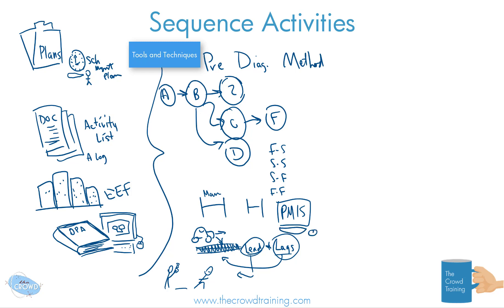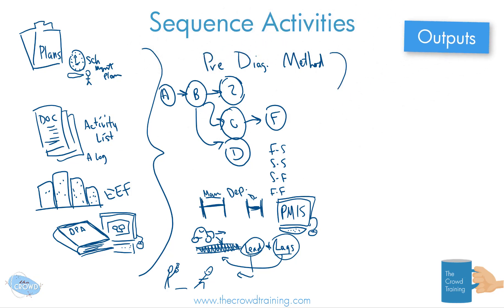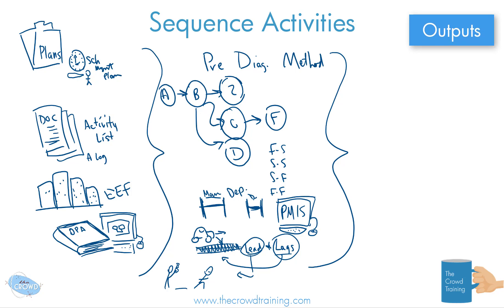You also have various project management information systems — essentially the tools and software you use to help perform the work and manage activities. To recap the tools and techniques: the key ones are the precedence diagramming method, dependency determinations such as mandatory and discretionary, leads and lags, and project management information systems.